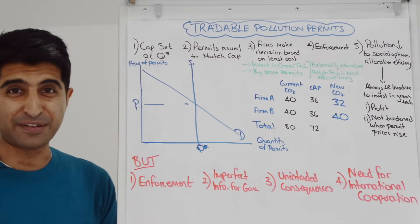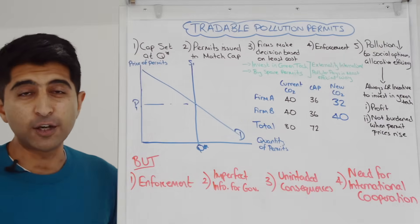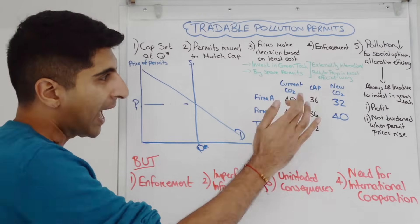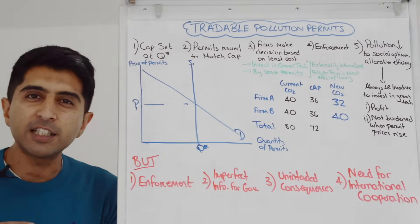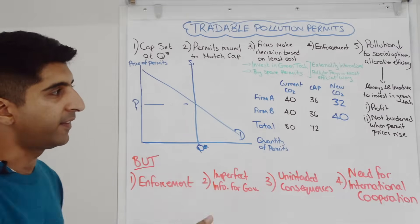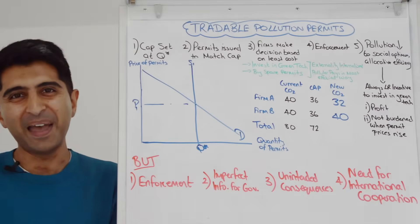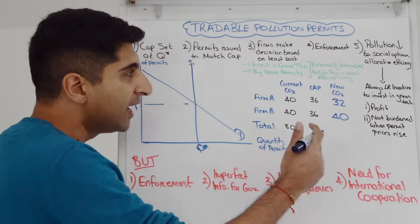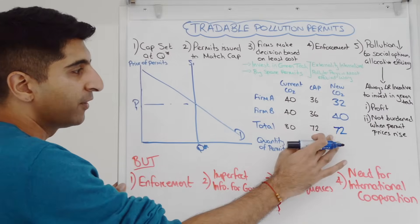Firm A has clearly invested in green technology because they brought down their CO2 levels — so successfully that they brought it down more than needed, to 32 tons instead of the cap of 36. Firm B has continued to emit at 40 tons, so they've clearly bought up spare permits — in this case the four spare permits from Firm A. It doesn't matter that both firms chose very different responses. The overall level of CO2 emissions is at the cap level of 72.